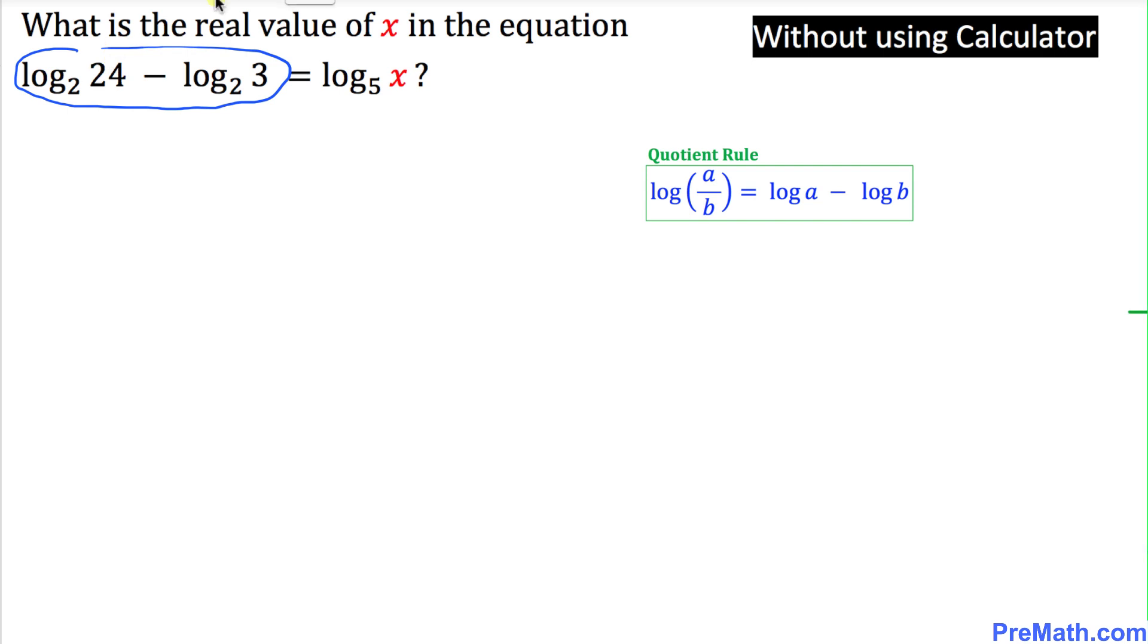In our case, 24 is our a and 3 is our b. So this thing could be written as log of 24 divided by 3 with a base 2, and we are going to leave the right-hand side as it is, log of x with a base 5.